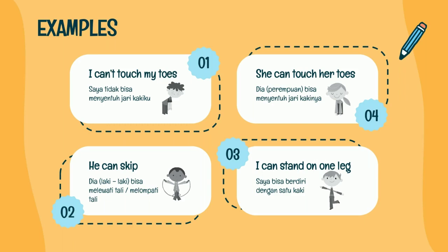Yang keempat: She can't touch her toes — artinya dia tidak bisa menyentuh jari kakinya. She sebagai subject, can't sebagai verb, touch her toes sebagai objek. Dari keempat contoh tersebut, bisa kalian pahami ya? Masih tentang can dan juga can't.